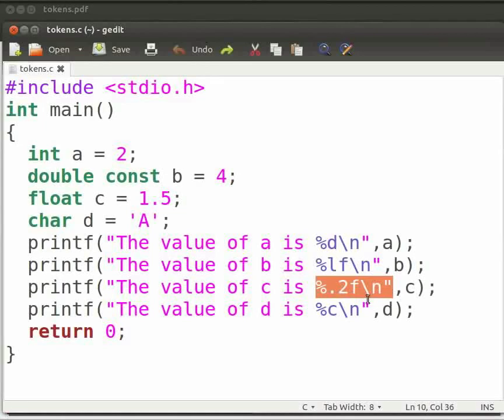It denotes that we can print only two values after the decimal point. Suppose here I want an output with three decimal places. Let us replace %.2f with %.3f. Now click on save.